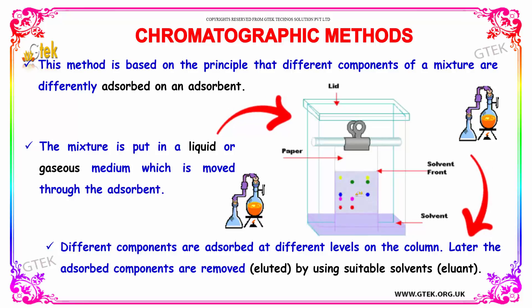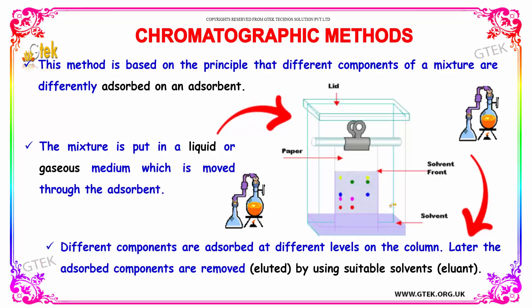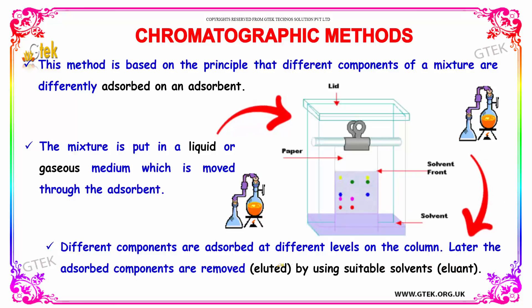The absorbed components are removed by using suitable solvents. The suitable solvents are called eluant and the absorbed components are called eluted.